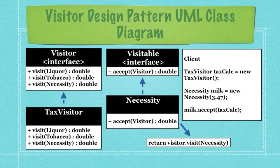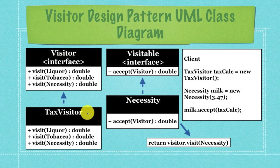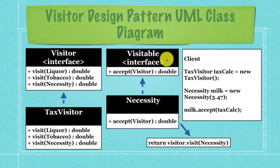Let's look at this in pictures. This is a basic UML class diagram of the Visitor Design Pattern. Basically what you're going to have here is the Visitor Interface, and we're going to implement it using what is called Tax Visitor. I'm going to act as if no taxes existed on products when you buy them, and our job is to implement taxes — in a way so that different types of products, being either liquor, tobacco, or necessity items, are taxed in completely different ways. Then we're going to create the Visitable Interface, and every class that implements it — being either necessity, tobacco, or liquor — is going to have that accept method inside of it.